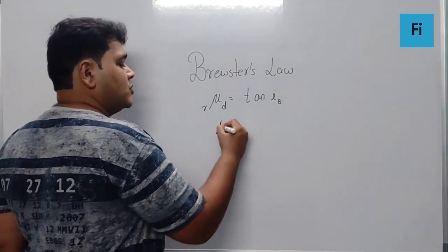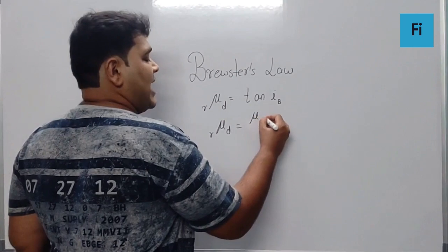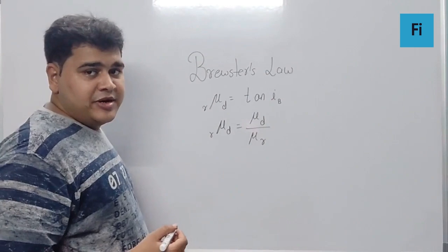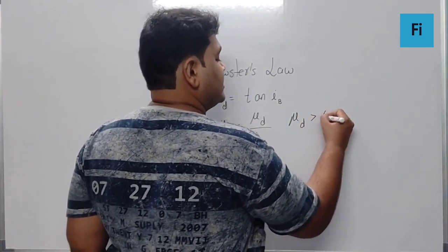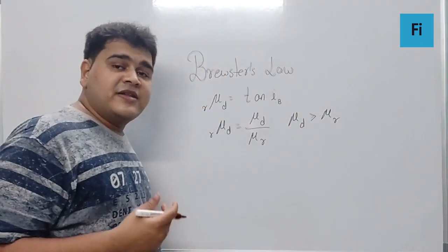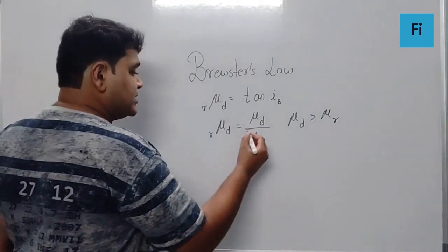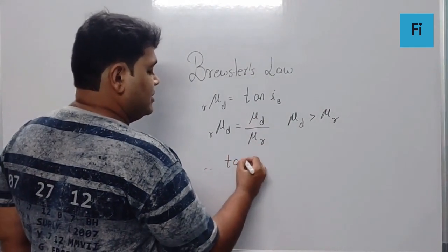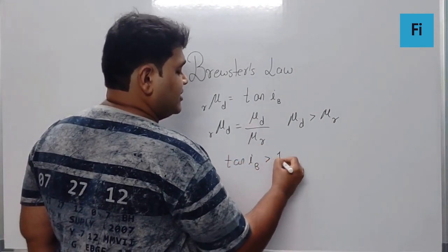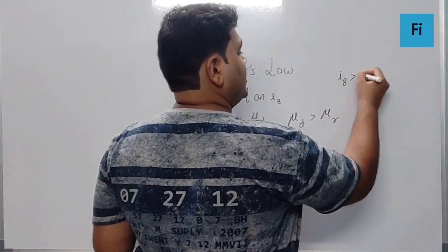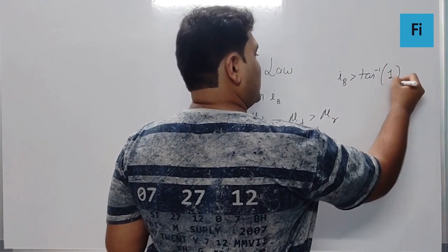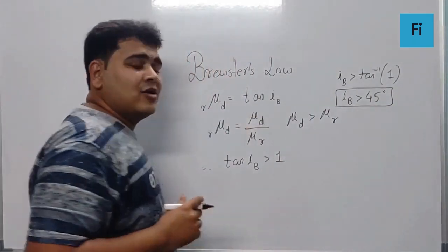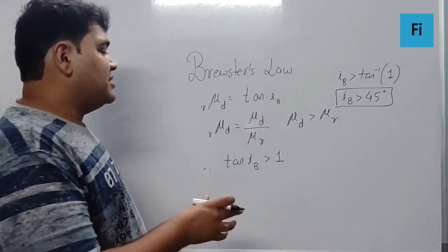Now we know that mu denser with respect to rare is the absolute refractive index of the denser medium upon the absolute refractive index of the rare medium, and we are very much aware that the denser medium has a greater refractive index compared to the rare medium. This means this ratio is definitely going to be greater than 1, and that makes tan of IB greater than 1, which means IB has to be greater than tan inverse of 1.